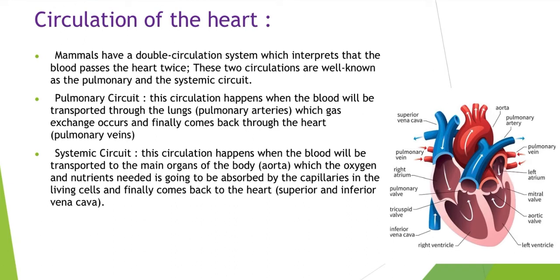Mammals have a double circulation system. Not all organisms — for example, fish have a single circulation system. Only mammals have a double circulation system, which means the blood passes through the heart twice. These two circulations are known as the pulmonary and the systemic circuits.